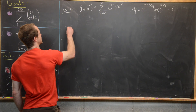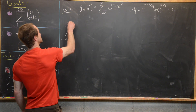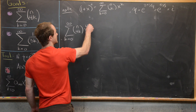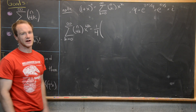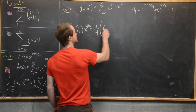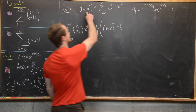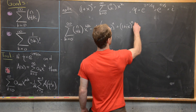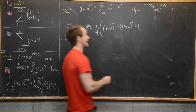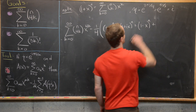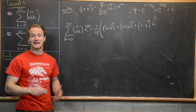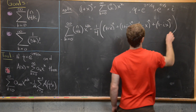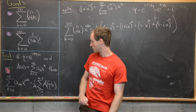We can now write the generating function: the sum k from 0 to infinity of n choose 4k times x^(4k) equals 1 over 4 times (1+x)^n + (1+ix)^n + (1-x)^n + (1-ix)^n. Here we've evaluated the generating function at x, ix = i²x = -x, and i³x = -ix, following from our tool.